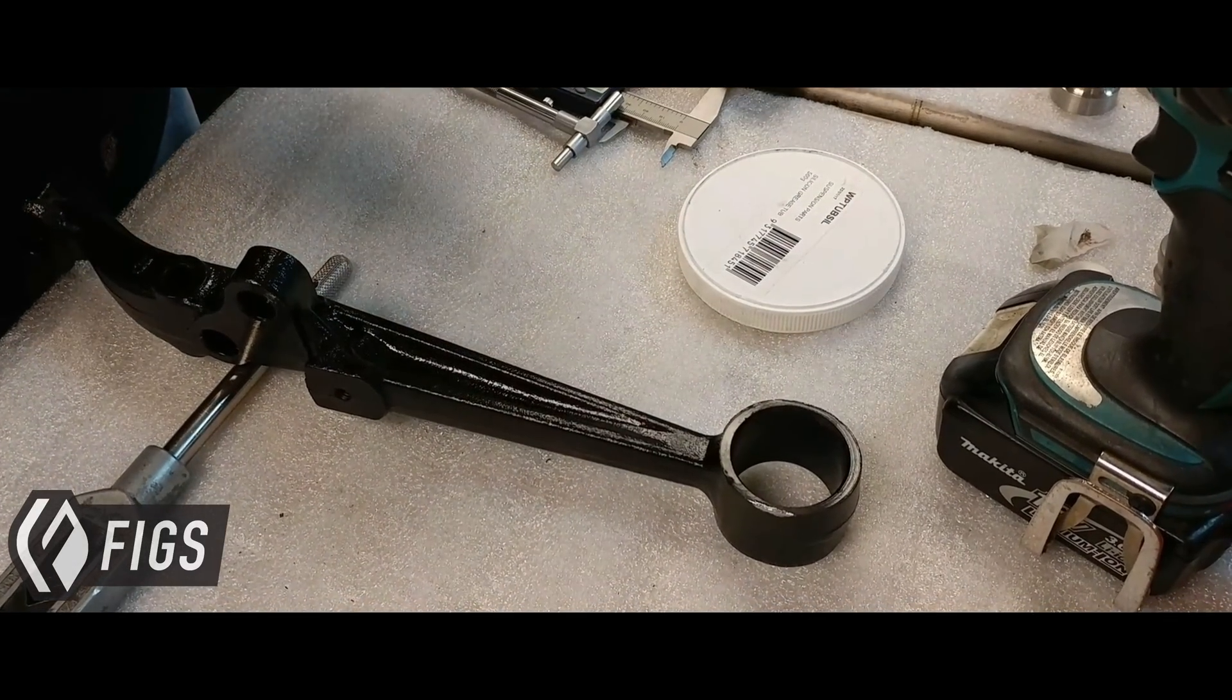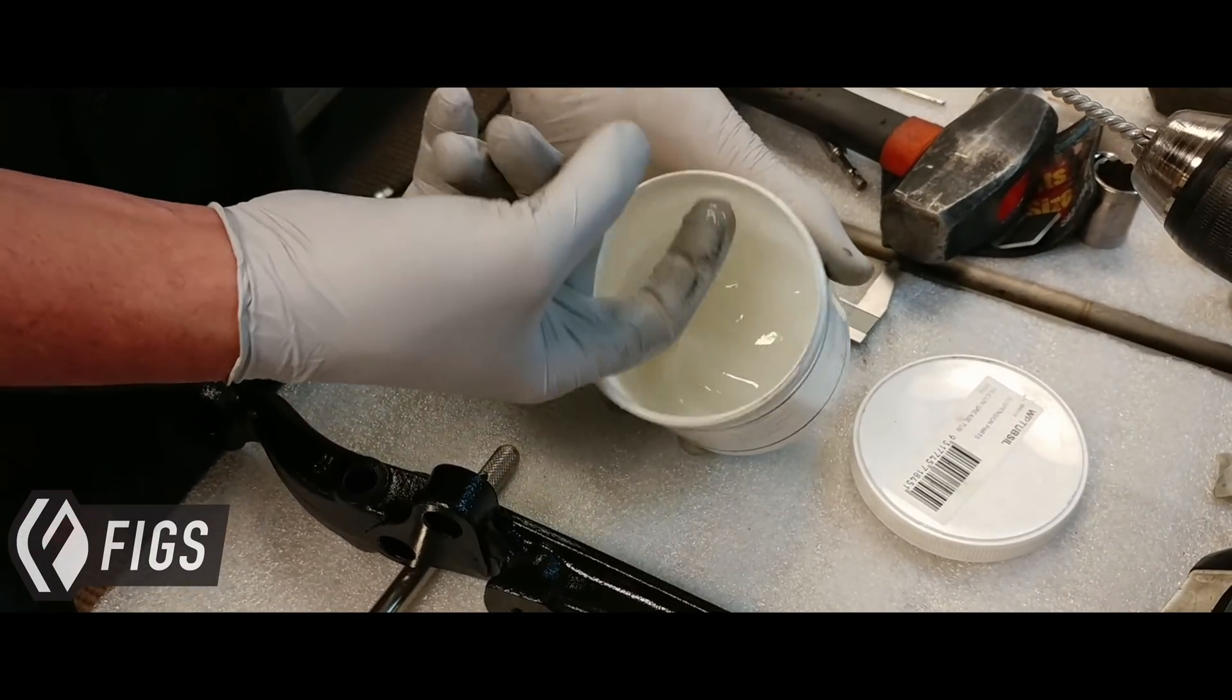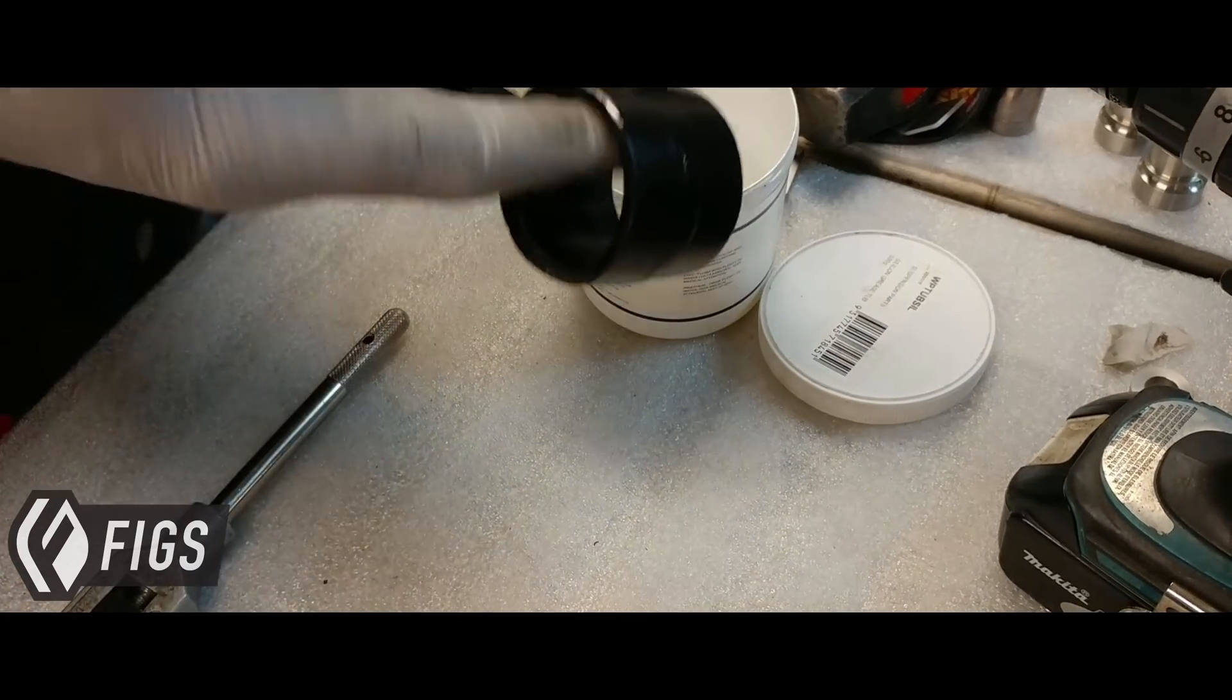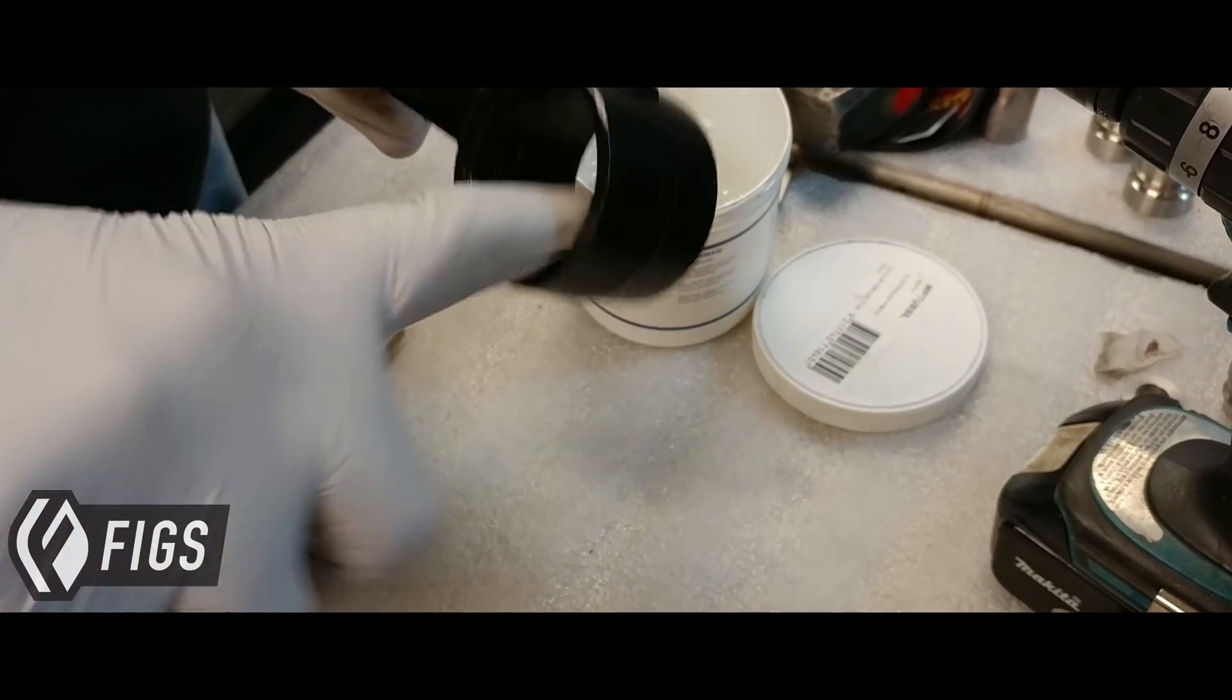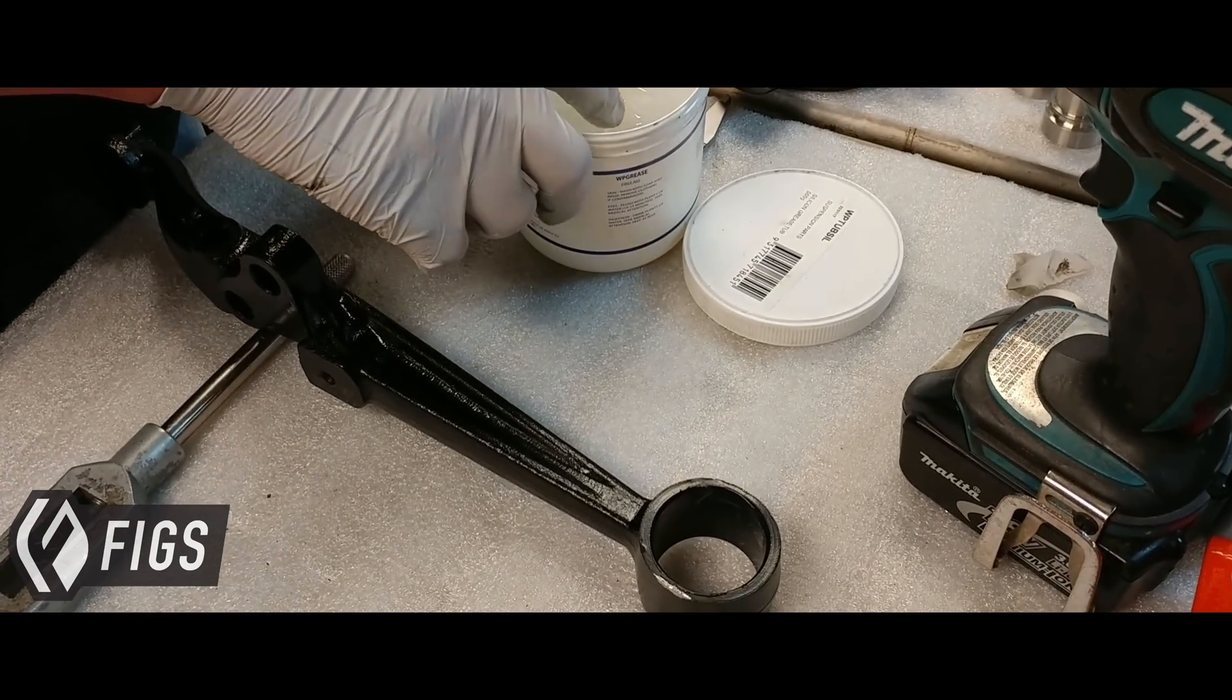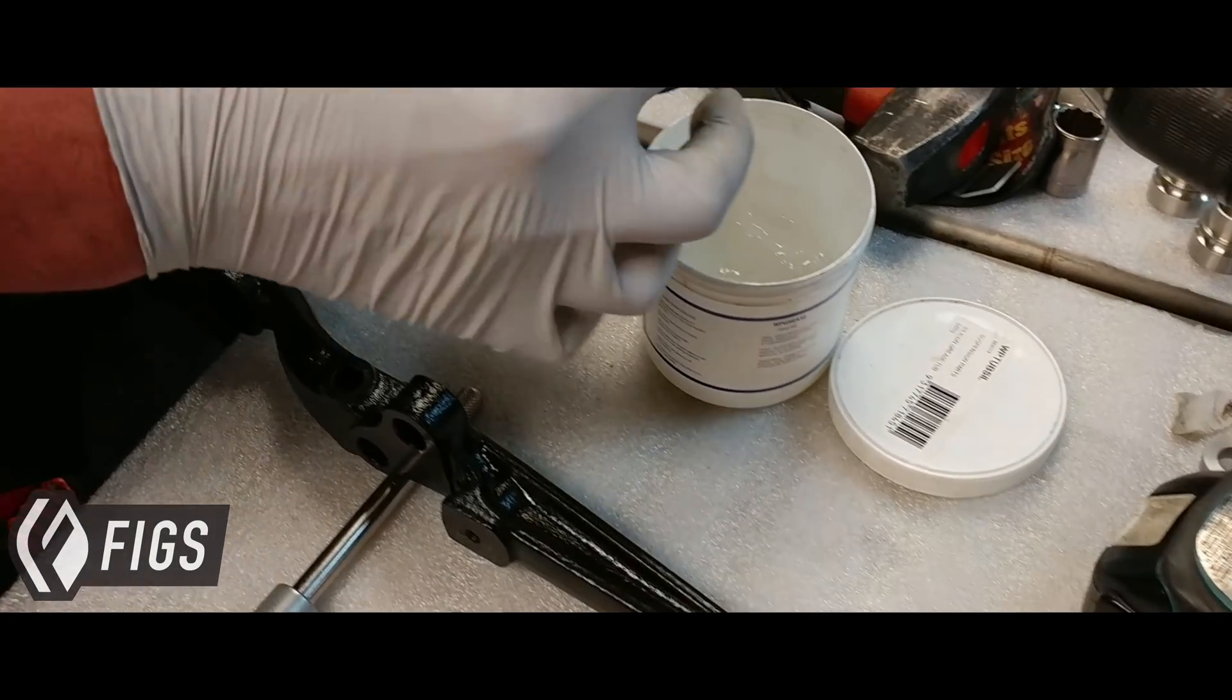Now we're going to prep it for the 3039 bushing. This is an IS300 lower control arm, so we're doing this for a customer. We're going to take this specially formulated Super Pro grease, we're going to line the inside of the barrel cup, and we're going to also lubricate the leading edge of the bushing.